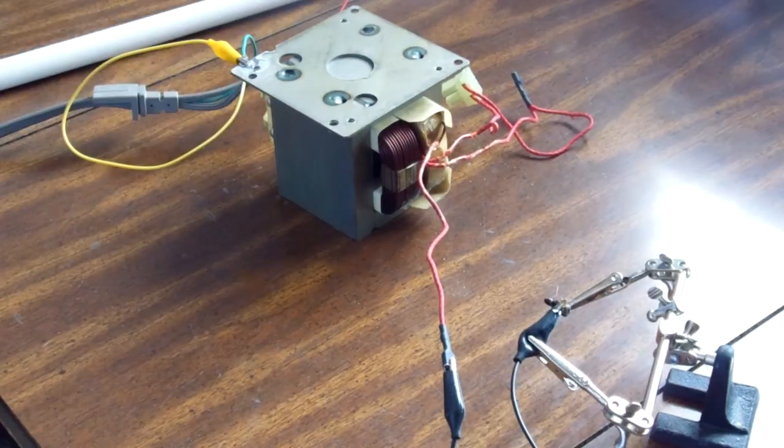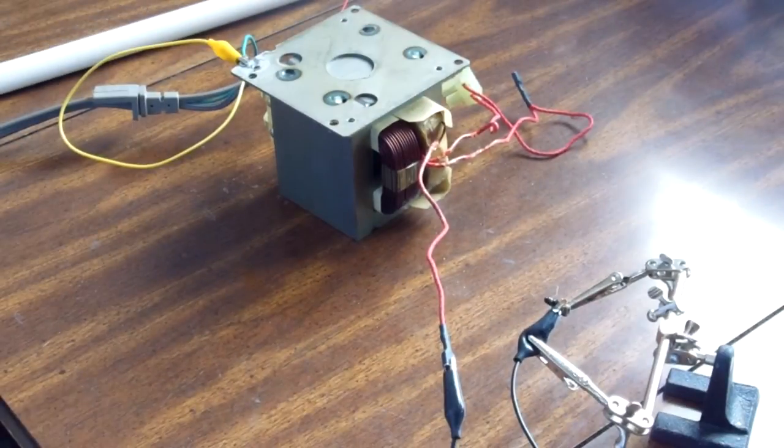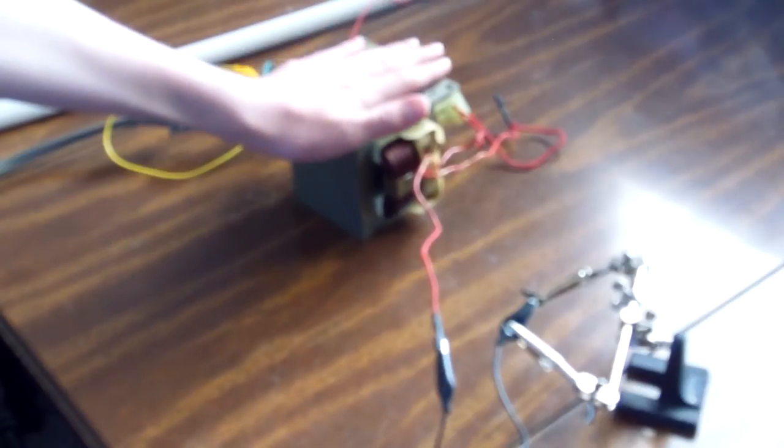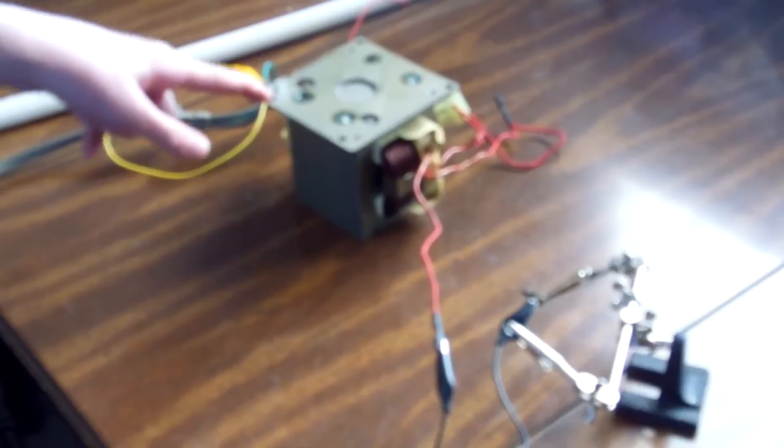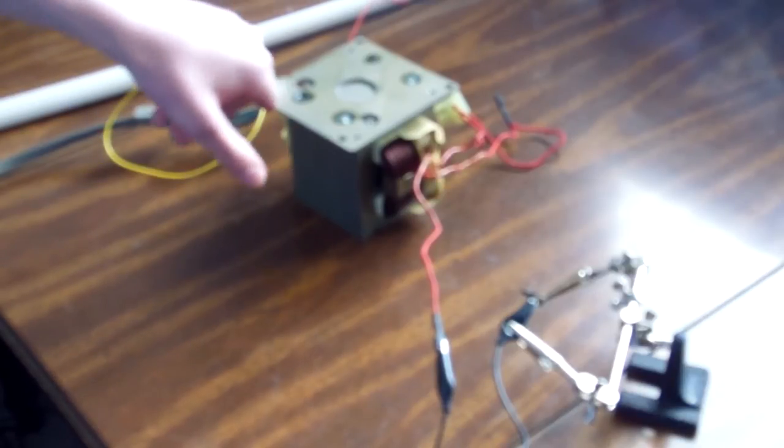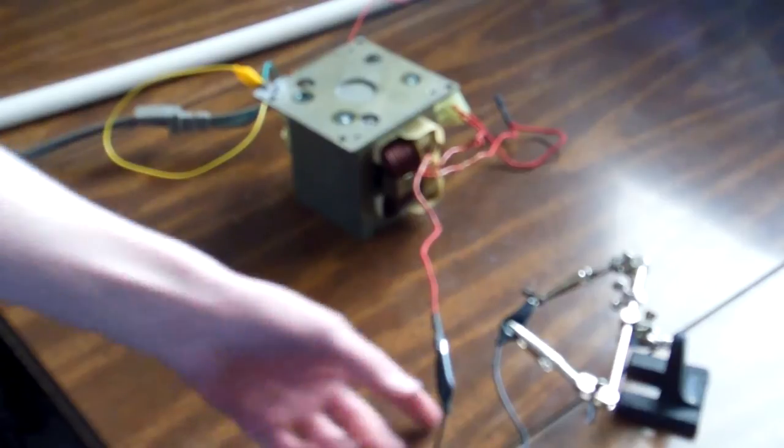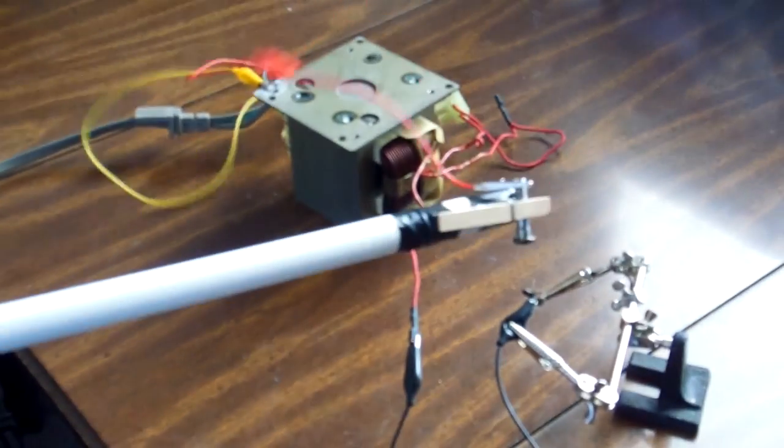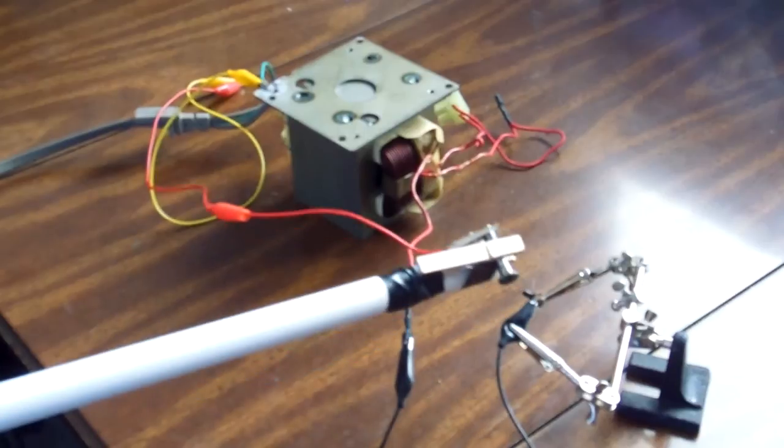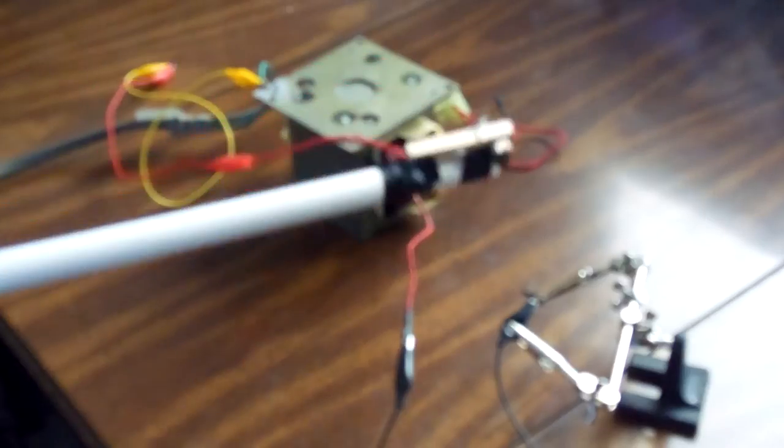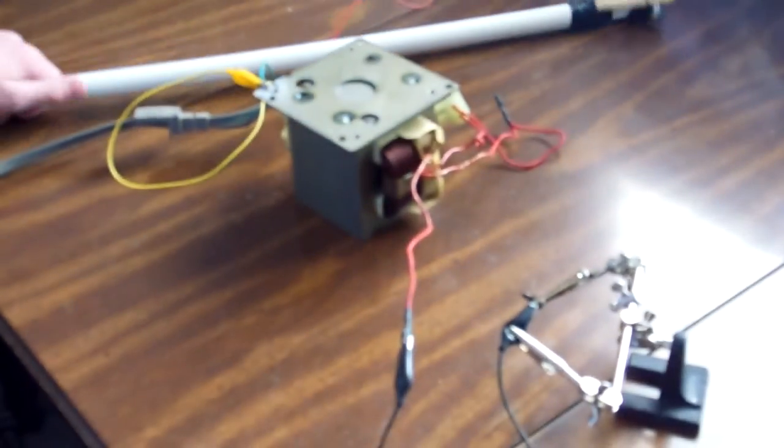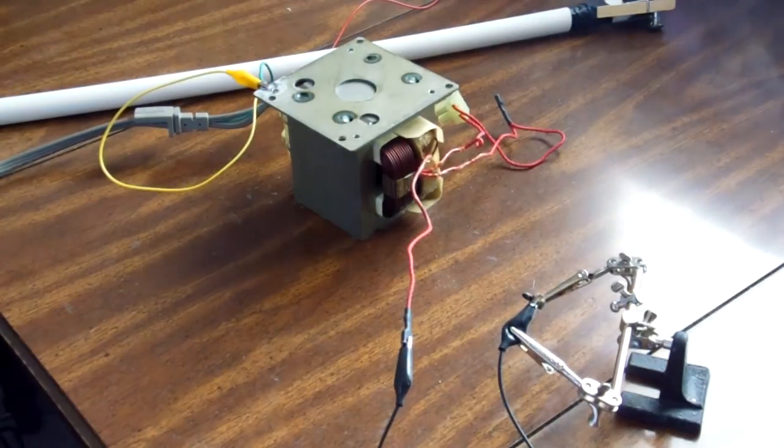So how does it work? This is simply a transformer that takes the 120 volts in my wall and steps it up to a couple thousand, around two thousand we'll say. Now when connected to ground, it'll spark and then we can draw large arcs like that because the electricity will arc between the two points. It's really that simple.